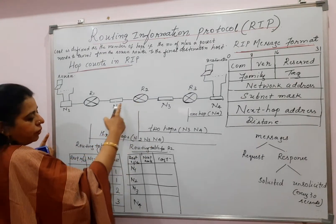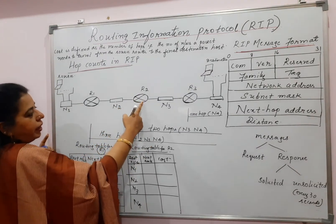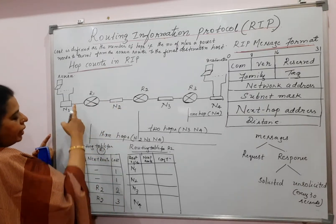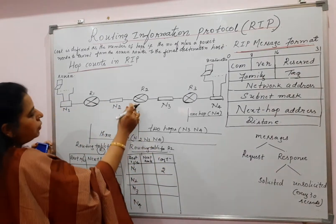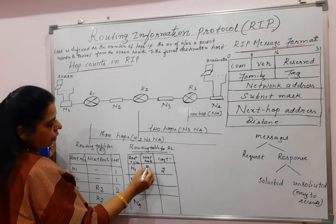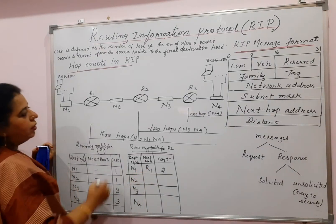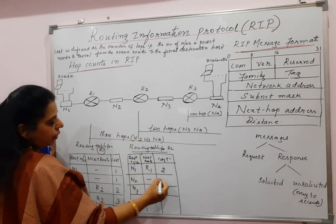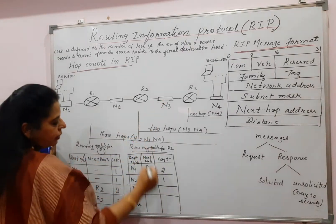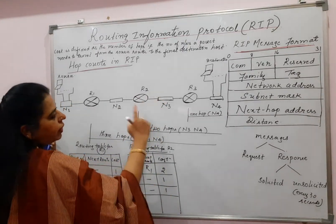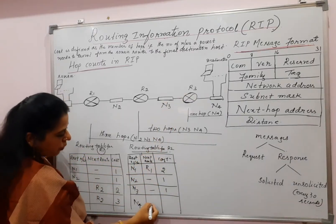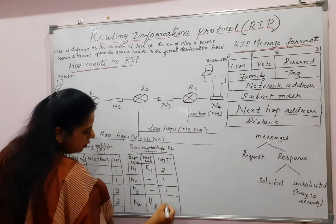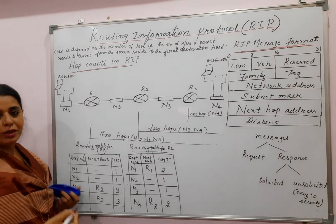Routing table for R2 to reach network N1: the cost is 2 and the next hop will be R1. For N2, it is directly connected so the cost is 1. For N3, directly connected, cost is 1. For N4, the next router is R3 and the cost is 2 — this network and this. Very simple.